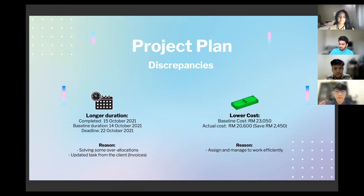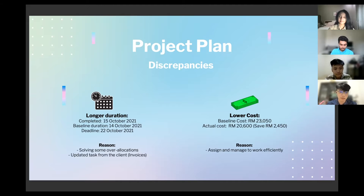For the discrepancies, the first is the longer duration. We finished our project on 15 October 2021, but our baseline duration was 14 October 2021, which means there was a one-day delay between the completed date and the baseline. However, we managed to finish the project on time and within the deadline of 22nd October 2021.